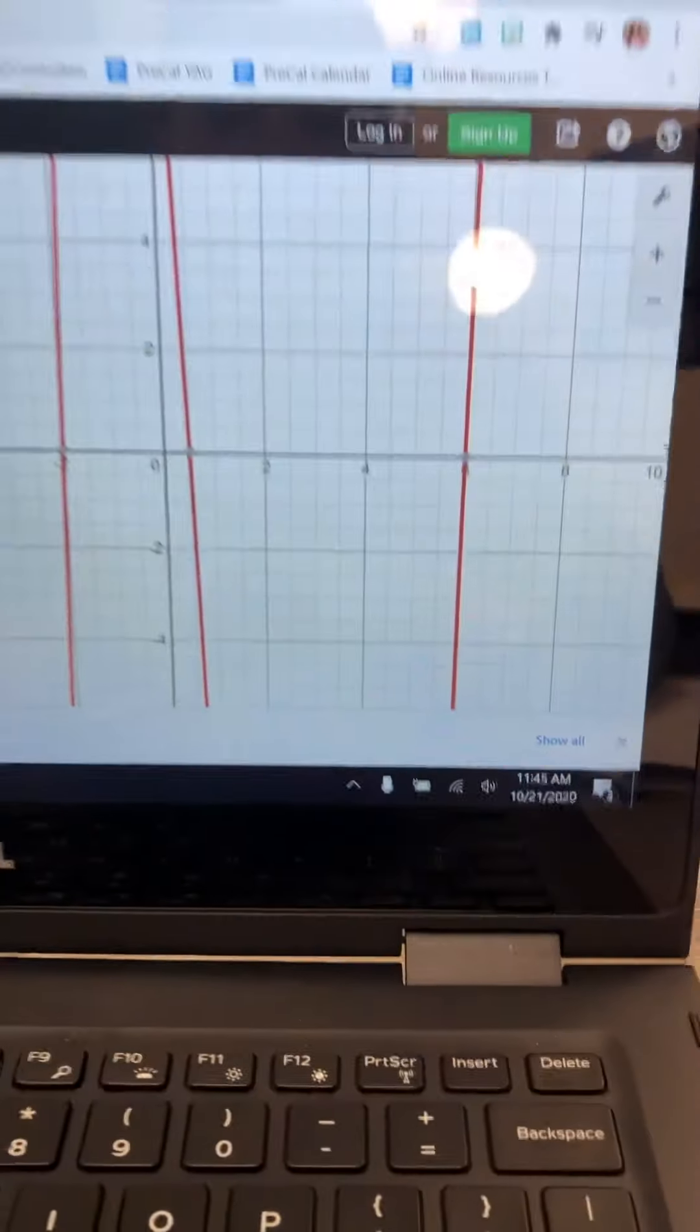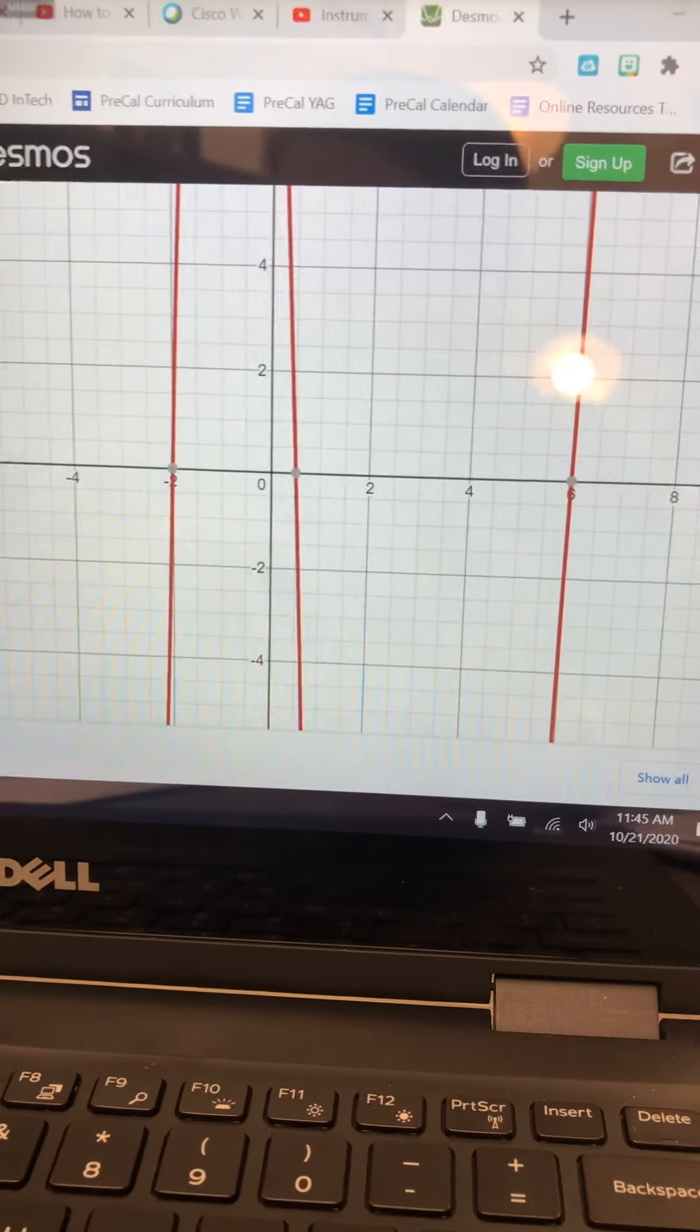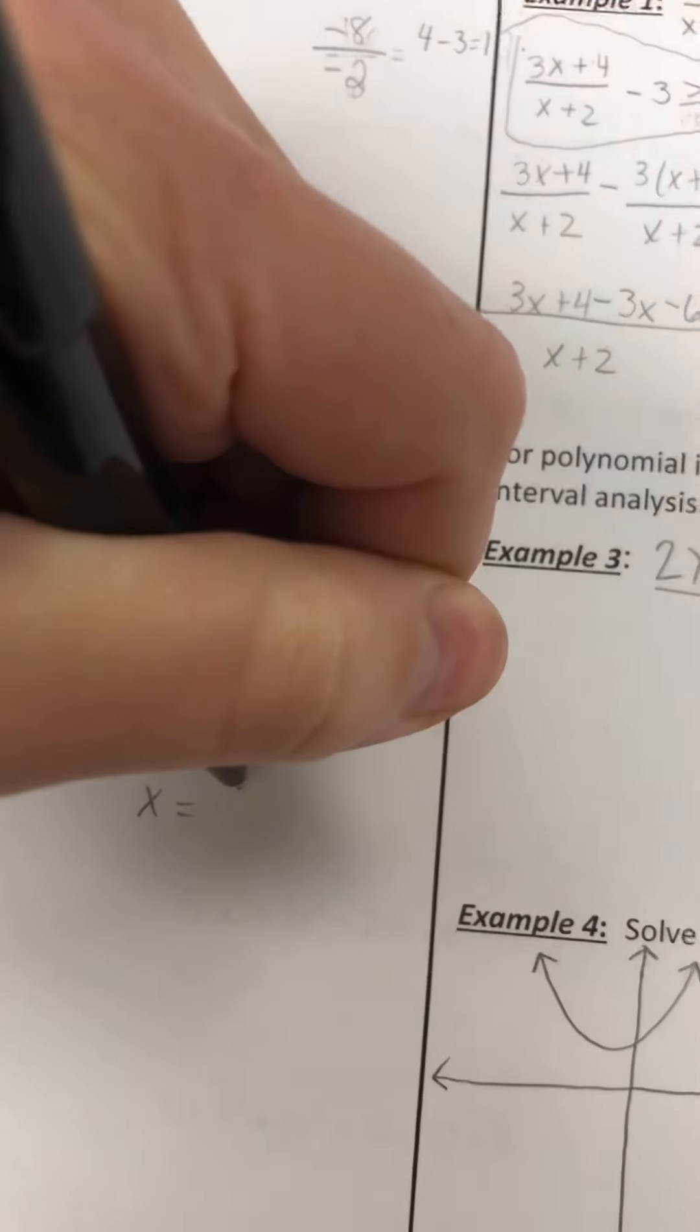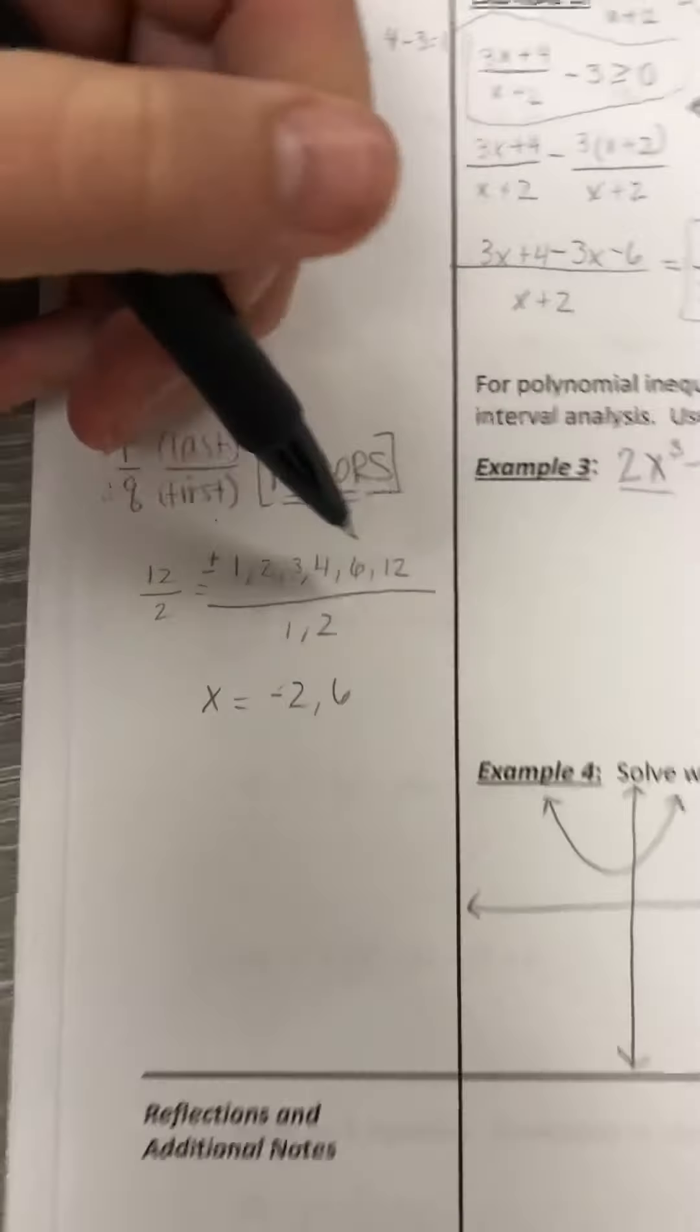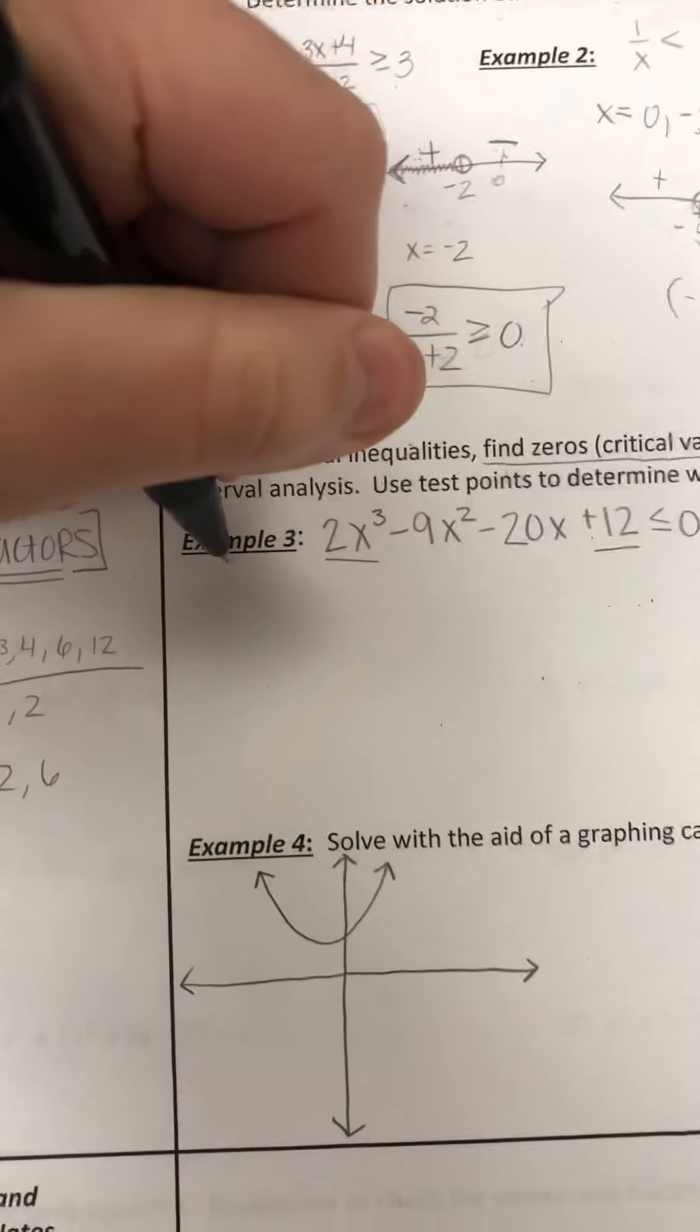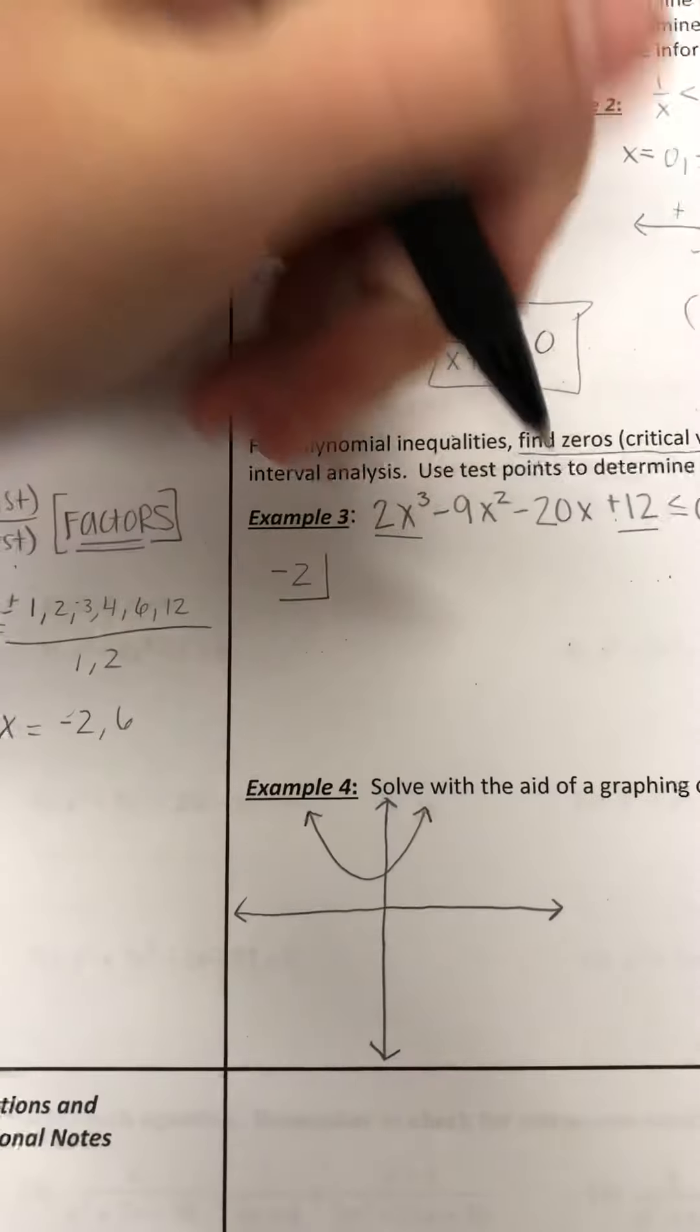So from what we can see, and I already went ahead and graphed it, I've got negative 2 or 6 here that I can see. Negative 2 or 6. Both of these are actually possibilities that we could use. I'm going to use negative 2, and you could use either one. Let me make that clear. You could use either one.